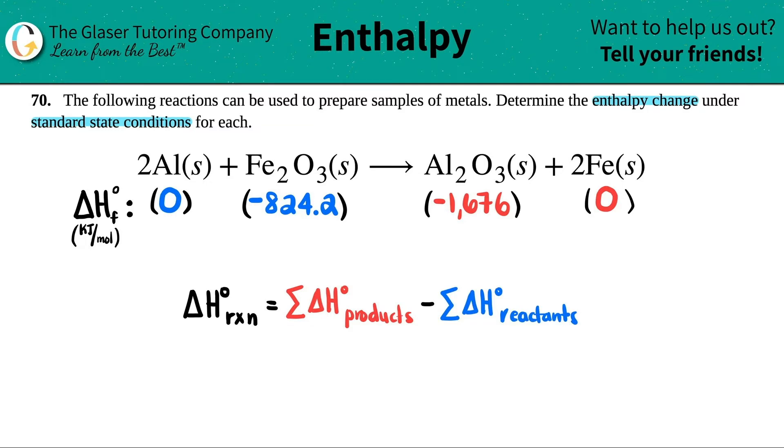All right. So for example, since I have two aluminums, technically I would multiply this zero by two. I have one Fe2O3, so I multiply that by one. I have one, because I don't see a number, Al2O3, so I times it by one. And then I have two Fe, so I multiply that zero by two.